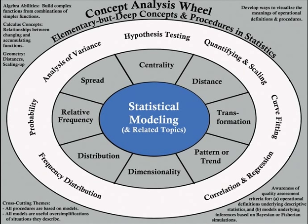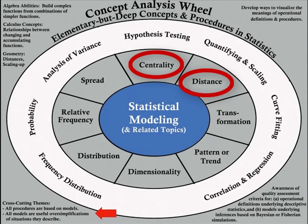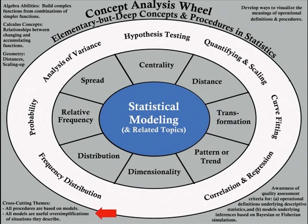Throughout all of these activities, you'll develop ways to visualize the meanings of concepts and procedures that you use. In particular, you'll learn that all statistical procedures are based on models that make different assumptions about attributes such as distance, centrality, spread, or distribution. You'll also learn that all models are useful over-simplifications of the situations they are intended to describe — so in some ways, all models are wrong. Consequently, one of the most important abilities you'll develop in this course will be to analyze and assess the assumptions which underlie the procedures you use, and the models that they presuppose.